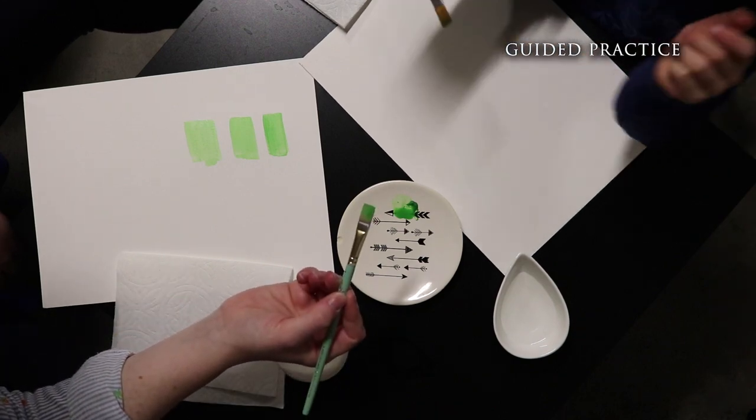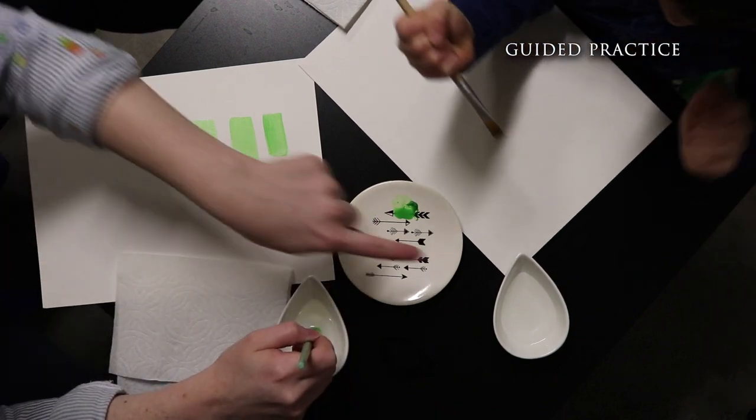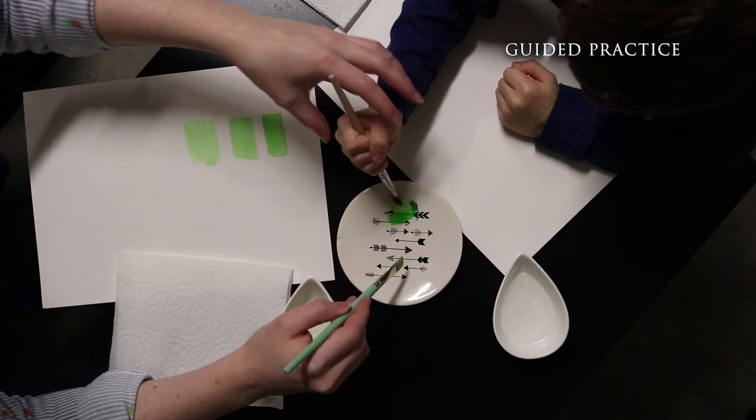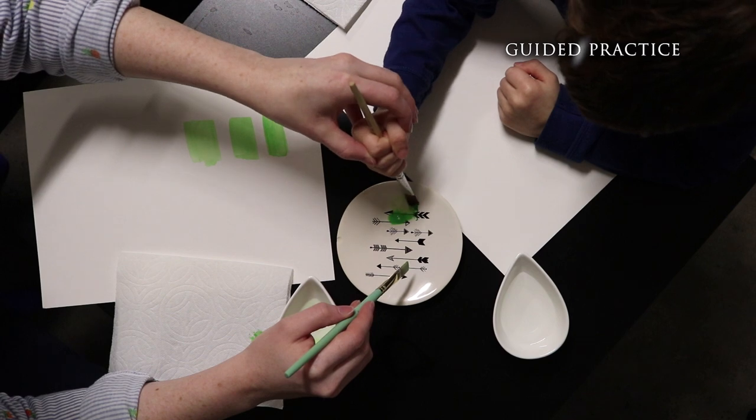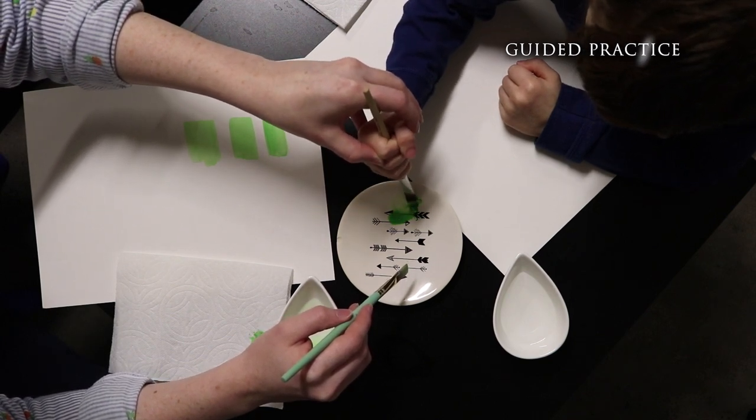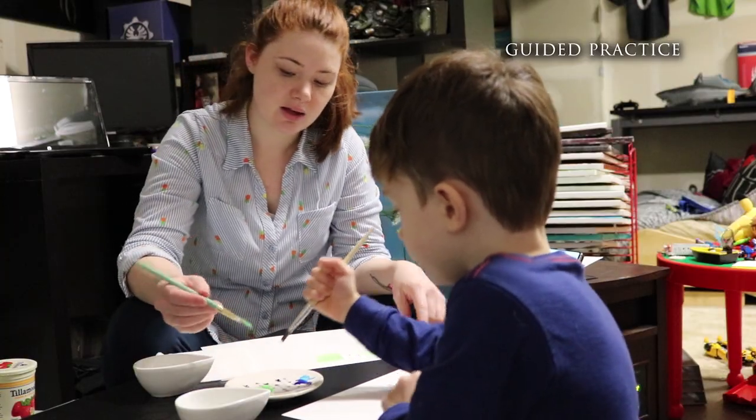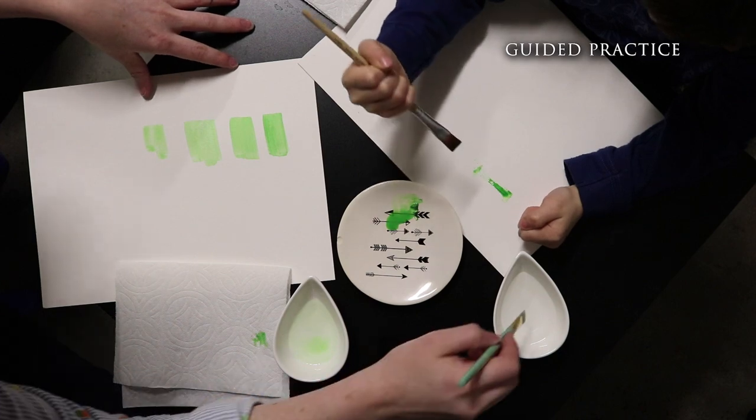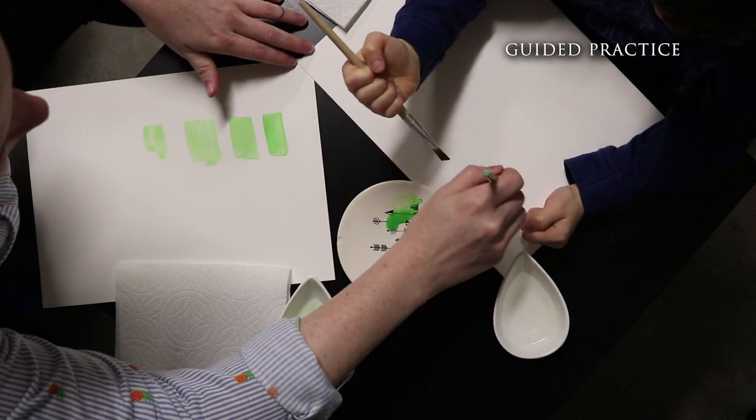Pick up your paint brush and dip it in a little bit of water. There you go. And put it in a little bit of paint. There you go. And now smooth, even brush strokes. Light brush strokes across the paper.